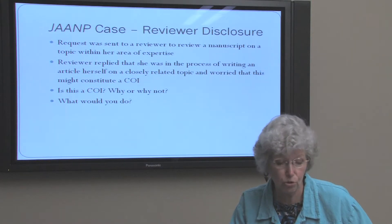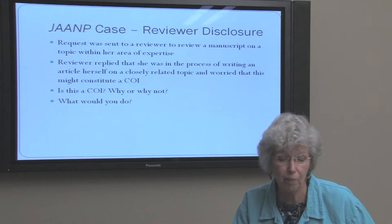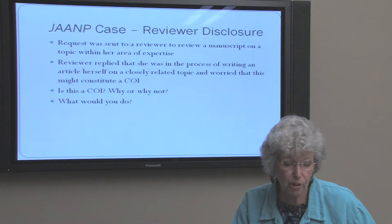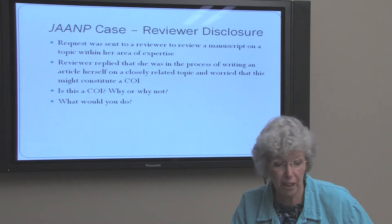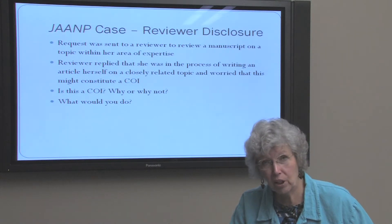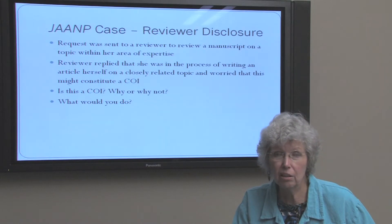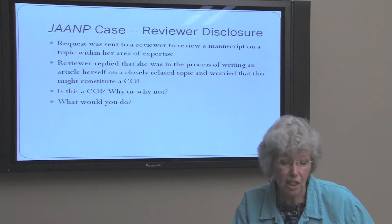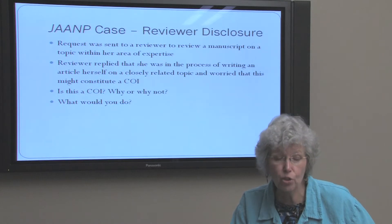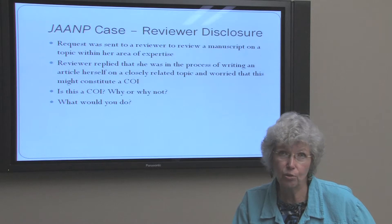Here's another situation you might be involved in as a reviewer. I hope many of you are reviewing for the journals that you read. We rely on reviewers to help us make decisions about what manuscripts are appropriate to publish. A reviewer was sent a request to review a manuscript, and she replied that she was in the process of writing an article on the same topic, or a closely related topic, and was concerned this might be a conflict of interest. I wouldn't be able to know, as the editor, whether that would influence her decision. So I thanked her — it could be a potential conflict of interest — and I thanked her for disclosing that to me. That was the appropriate thing for her to do, and I assigned another reviewer to the article.